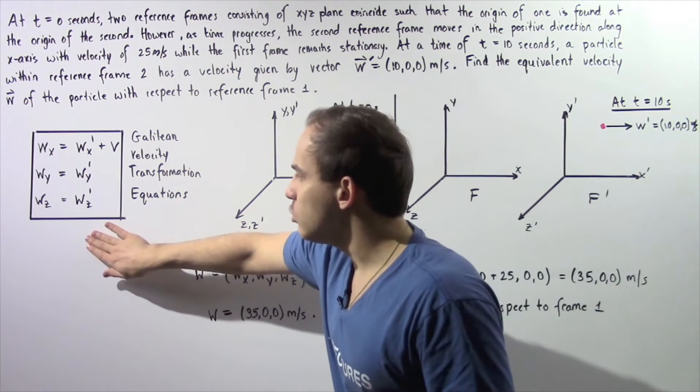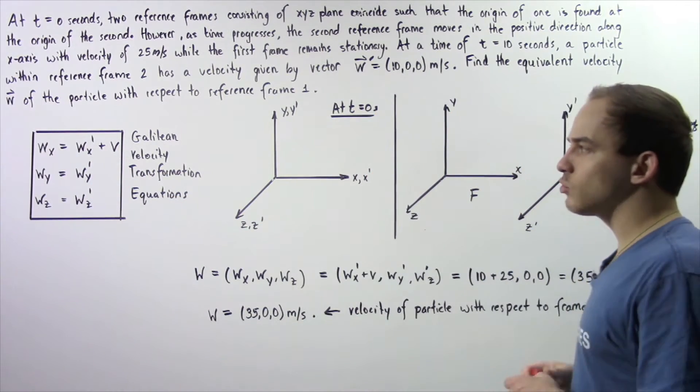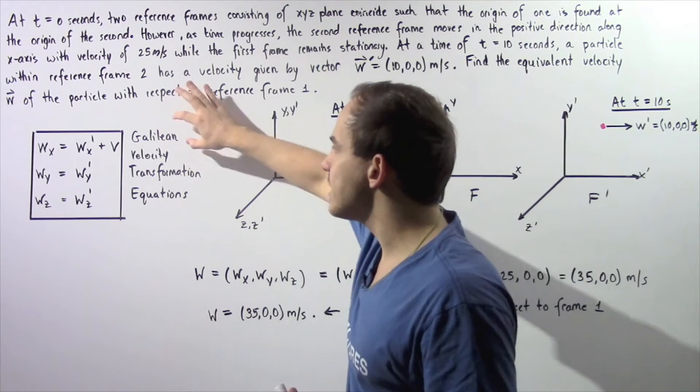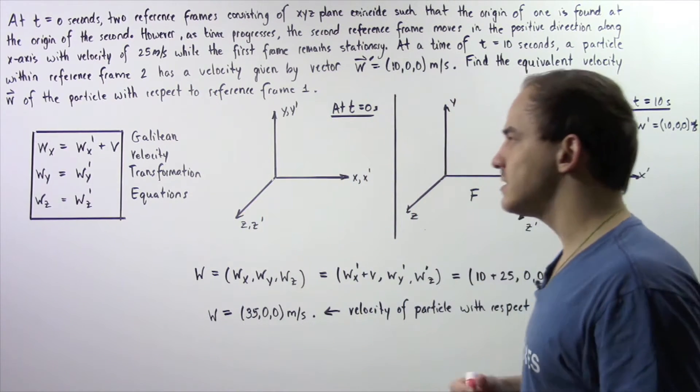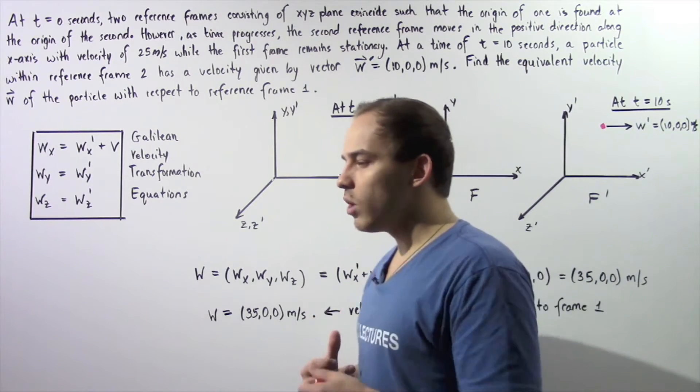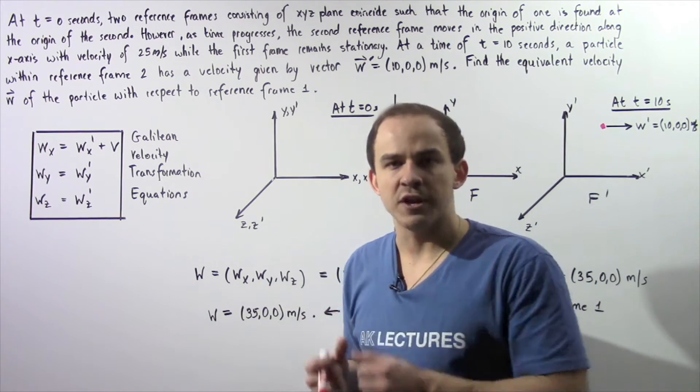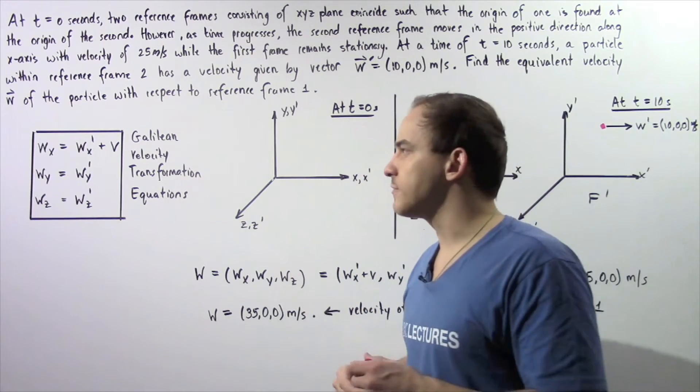So we basically want to apply these three equations that we derived in the previous lecture. These are known as the Galilean velocity transformation equations. They allow us to transform velocity from one reference frame to a second reference frame.